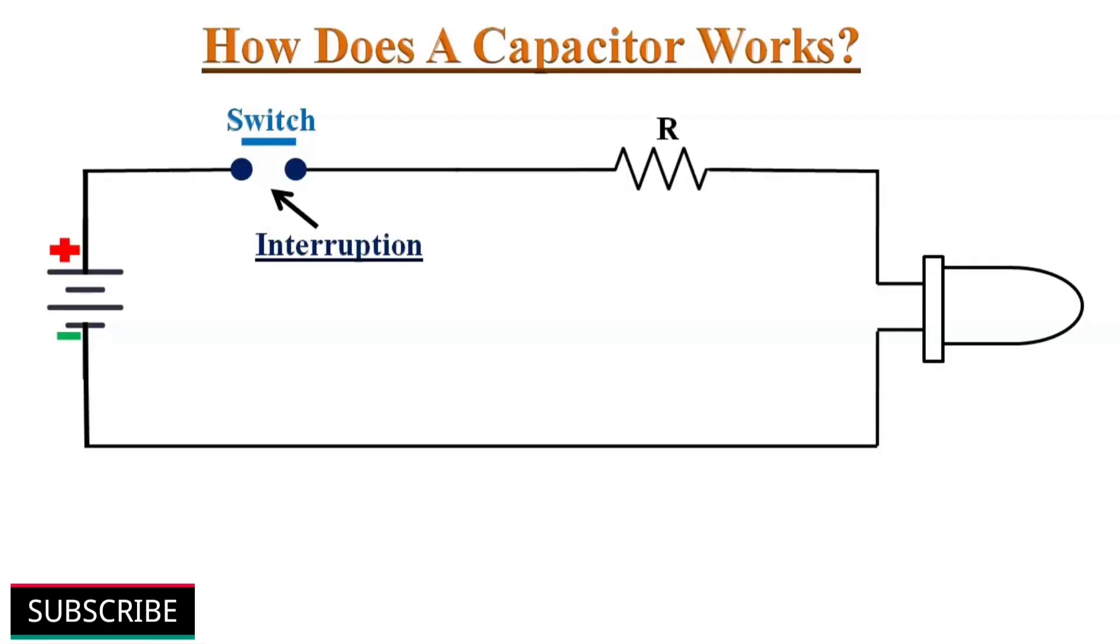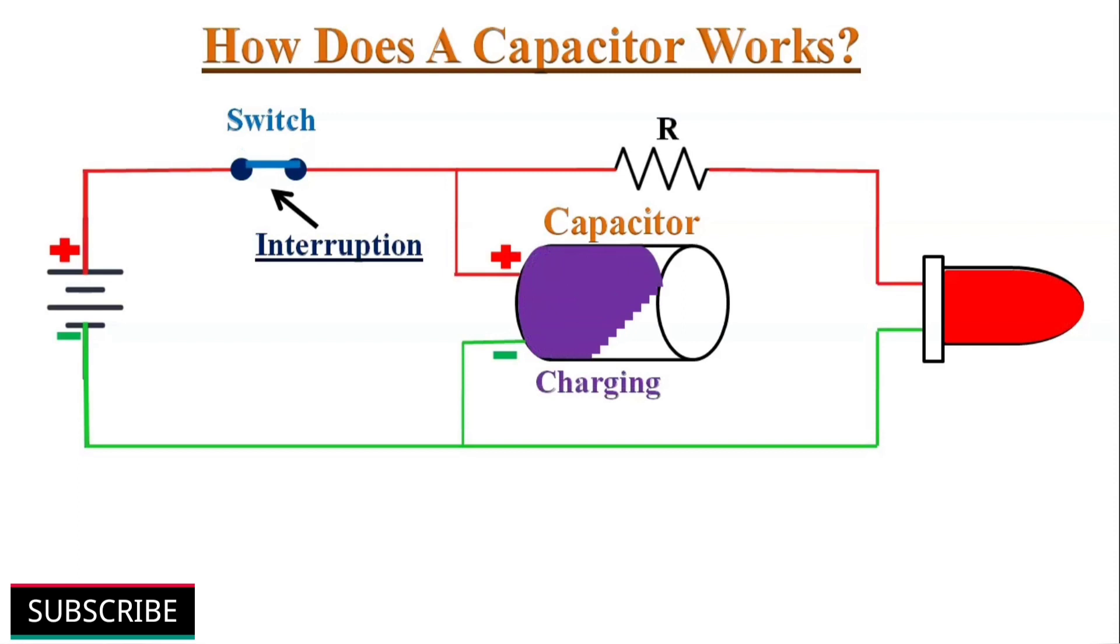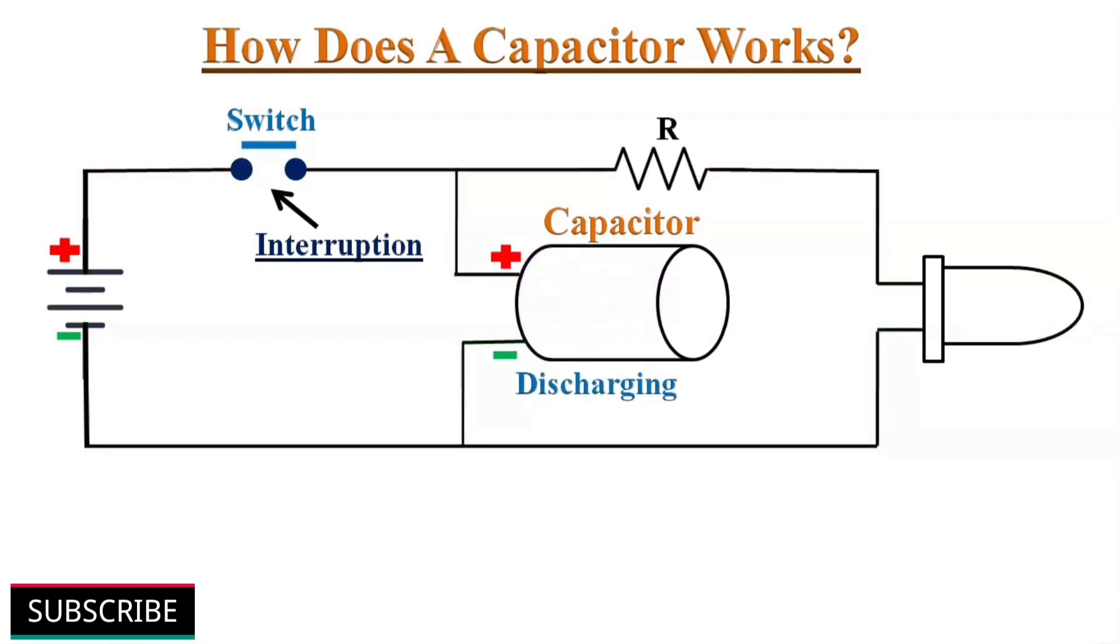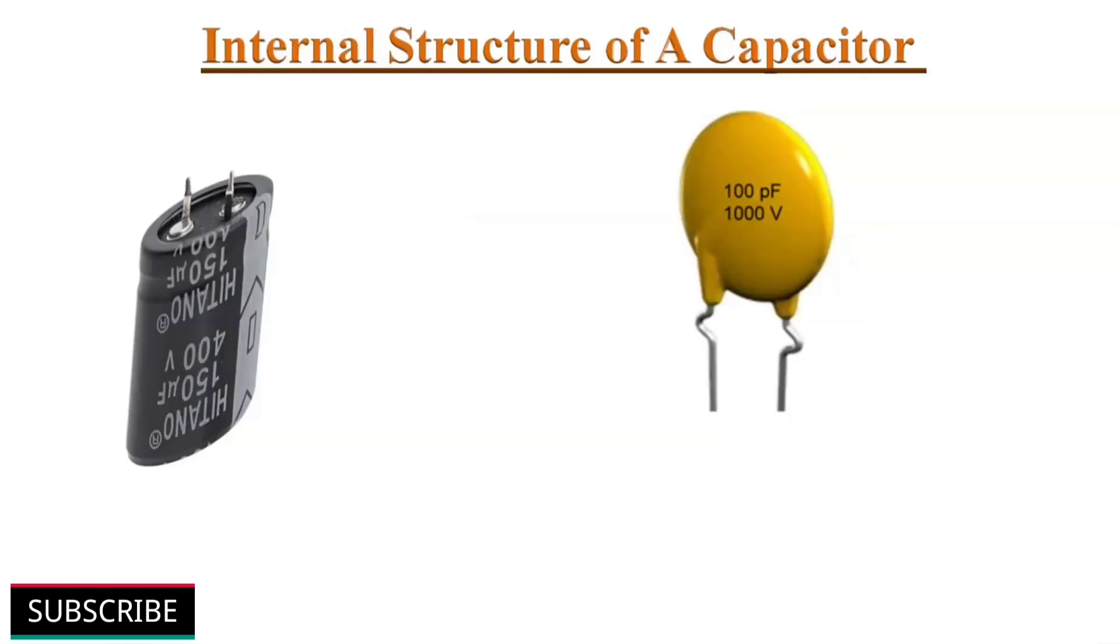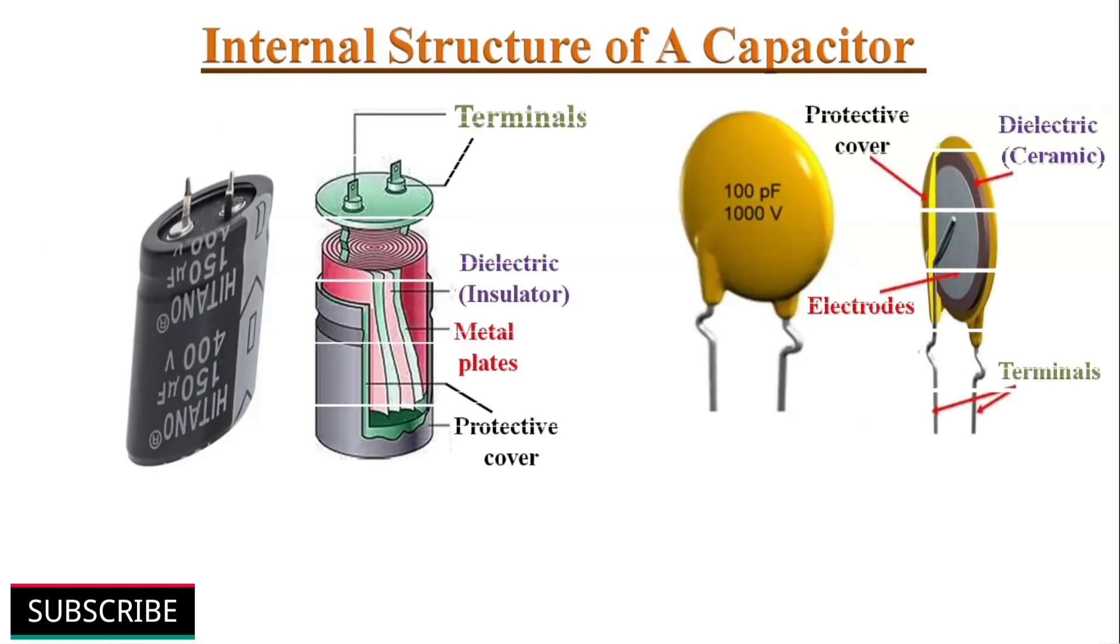Let's take an example of a simple circuit without a capacitor. If we turn on and off the switch very fast to simulate interruptions, the light will flash. But if we connect a capacitor into the circuit, then the light will remain on during the interruptions as long as there is charge in the capacitor. Because the capacitor is discharging and powering the circuit, the capacitor will charge and discharge to smooth out the interruptions of the supply.